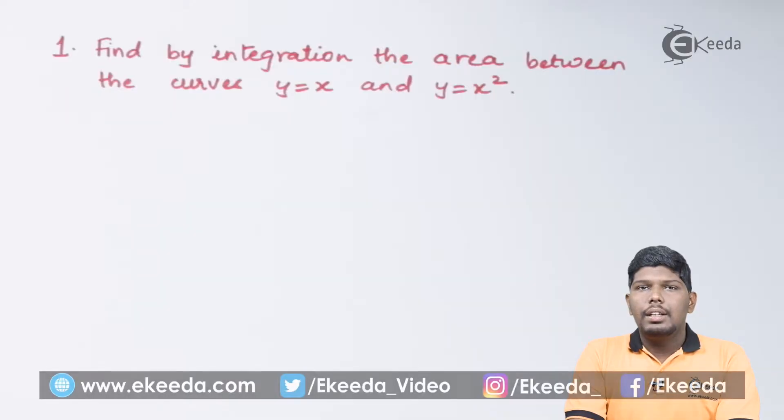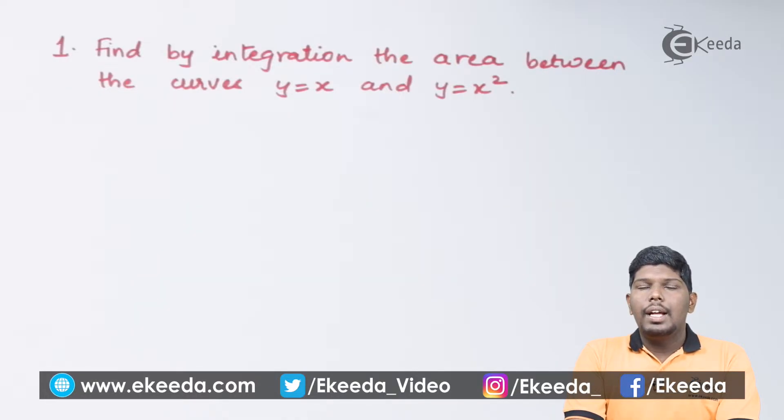Find by integration the area between the parabola y = x² and the line y = x.